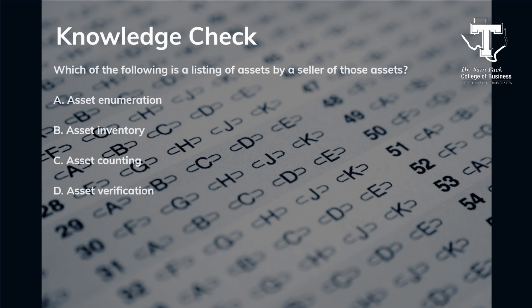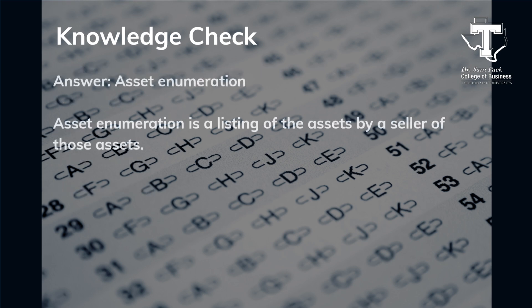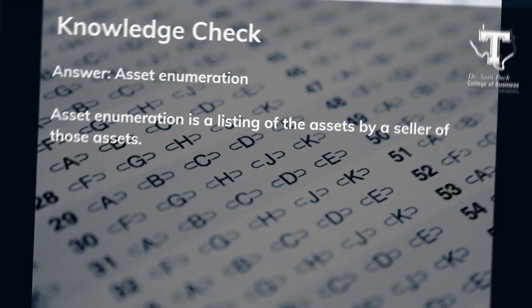Knowledge Check: Which of the following is a listing of assets by a seller of those assets? Asset Enumeration, Asset Inventory, Asset Counting, or Asset Verification? The answer is Asset Enumeration — asset enumeration is a listing of the assets by a seller of those assets.